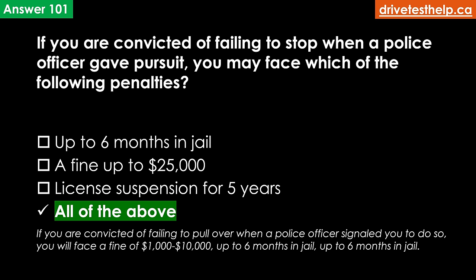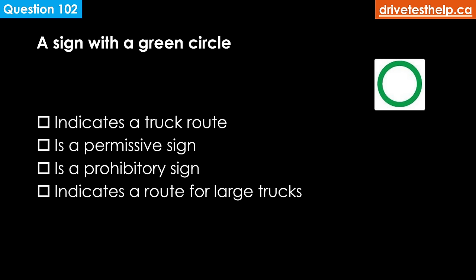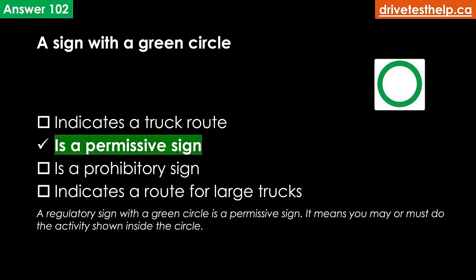A sign with a green circle indicates it is a permissive sign. A regulatory sign with a green circle is a permissive sign — it means you may or must do the activity shown inside the circle.